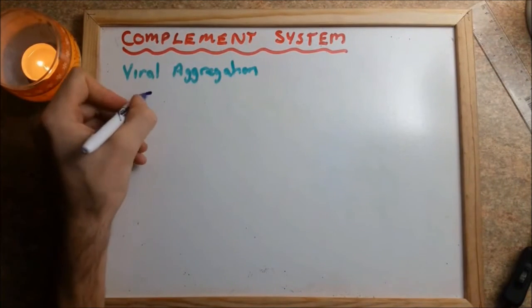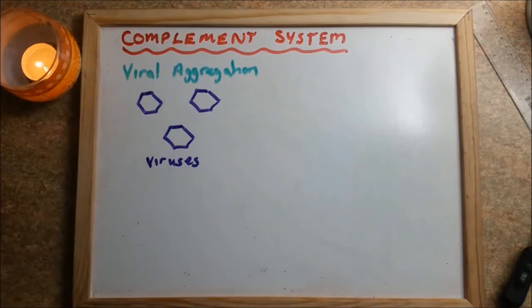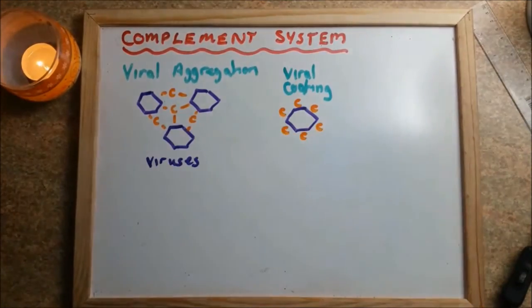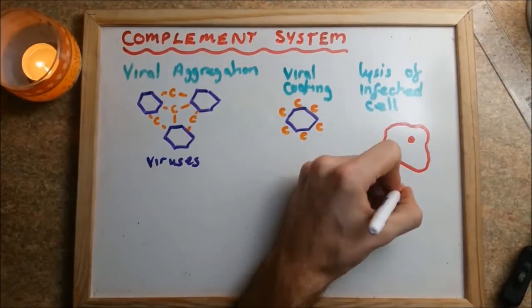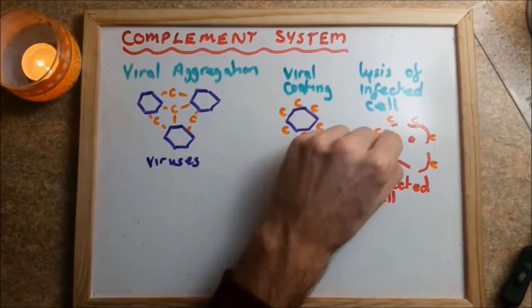Opsonization leads to viral aggregation where complement proteins adhere to viral capsids, causing them to cluster and preventing cell entry. Cell entry is also prevented by the viral coating of complement. Lysis of viral-infected cells occurs when the virus has already entered the host cell to prevent maturation of the virus.